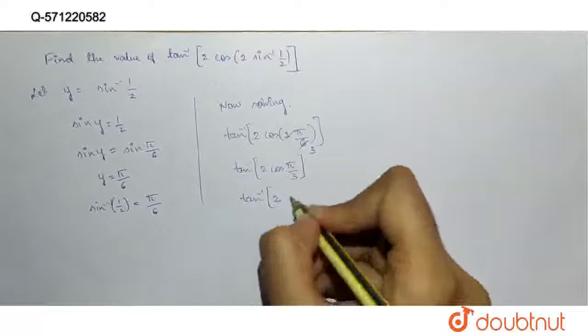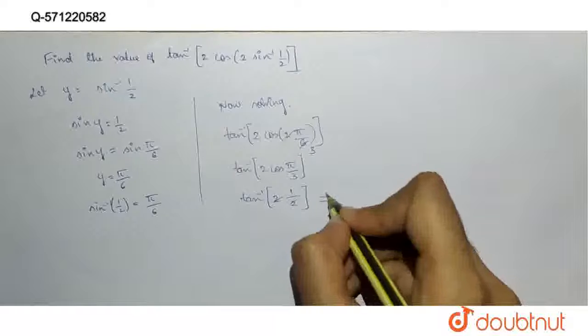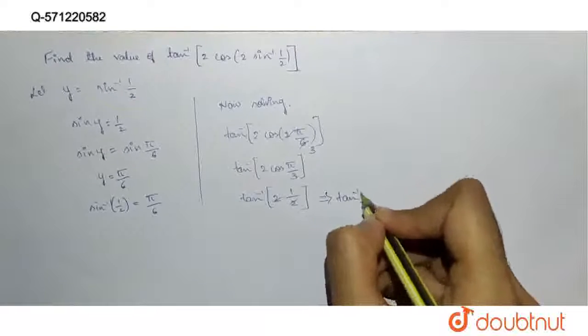Tan inverse of 2 cos 60 degree is 1 by 2. 2, 1, 2 gets cancelled. This implies tan inverse of 1.